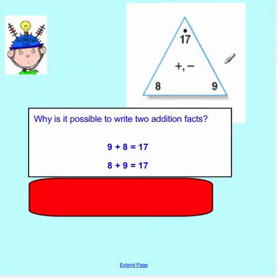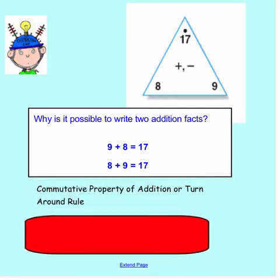Why is it possible to write two addition facts? Why is it that I could do 9 plus 8 equals 17 and also do 8 plus 9 equals 17? This is because of something called the commutative property of addition. In third grade, we call this the turnaround rule. It simply means if I do 9 plus 8 first to get 17, I could flip around the 9 and the 8 and do 8 first this time. Do 8 plus 9, I'm still going to get that answer of 17.